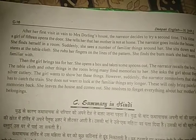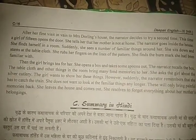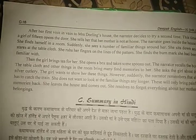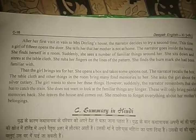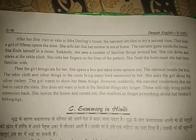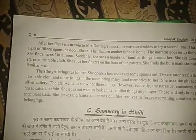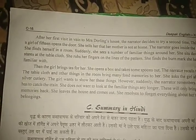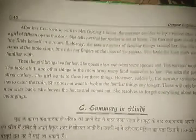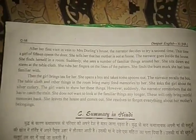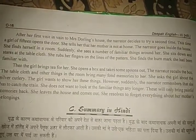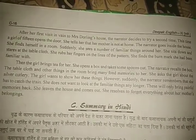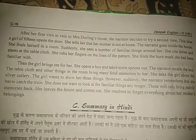She sits down — वो वहाँ पे बैठ गई — and stares at the tablecloth. अचानक उसने बहुत सारी जानी-पहचानी वस्तुएं वहाँ पाईं. She rubs her finger on the lines of the pattern — उसने मेज के ऊपर जो कपड़ा डाला हुआ था उस पर बने pattern पर, परती रूप पर, अपनी उंगलियाँ रगड़ने लगी — and finds a burn mark she recognizes — वो जला हुआ निशान जिससे वो परिचित थी.